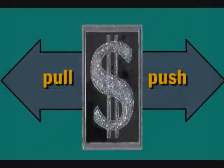Cost-push inflation happens when there is an increase in the cost to produce goods and services. These increased production costs could be increases in the cost of raw materials, energy, or any other item used in production. They also could be increases in wages. This is sometimes referred to as wage-push inflation or the price-wage spiral.